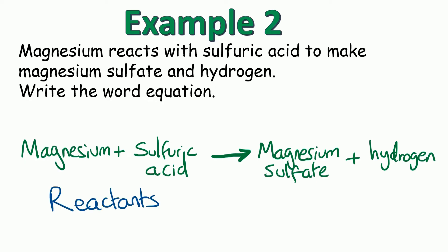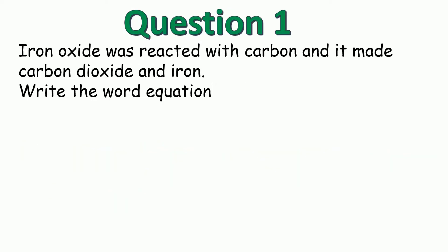Have a go at this question for yourself. Iron oxide was reacted with carbon and it made carbon dioxide and iron. Write the word equation. Pause the video and have a go with pen and paper, and then resume the video to see if you got it right. So once again we start with the arrow in the middle. On the left are our reactants that we're starting with: iron oxide and carbon. And on the right the products that are made: carbon dioxide and iron. So well done if you got that one correct.